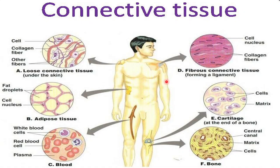The function of tendon is to join a muscle with a bone. The specialized connective tissues include three types: blood, cartilage, and bone.